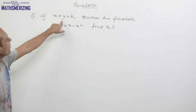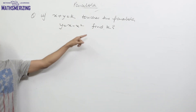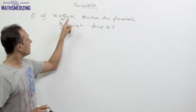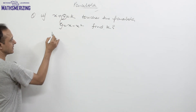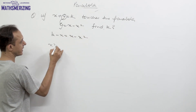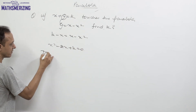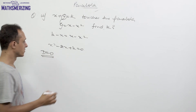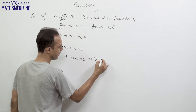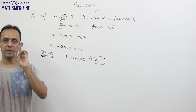Now consider the question: if the line x + y = k touches the parabola y = x − x², find the value of k. We find the point of intersection by substituting y = k − x, giving the quadratic x² − 2x + k = 0. Applying the condition of tangency D = 0: 4 − 4k = 0, so k = 1.